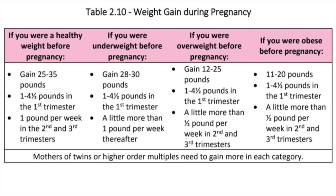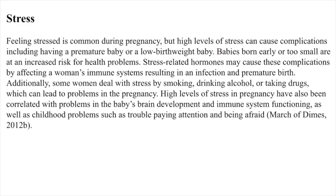Mothers of twins or higher order multiples need to gain more weight in each category. Stress: feeling stressed is common during pregnancy, but high levels of stress can cause complications, including having a premature baby or a low birth weight baby. Babies born early or too small are at an increased risk for health problems. Stress-related hormones may cause these complications by affecting a woman's immune systems, resulting in an infection and premature birth. Additionally, some women deal with stress by smoking, drinking alcohol, or taking drugs, which can lead to problems in the pregnancy. High levels of stress in pregnancy have also been correlated with problems in the baby's brain development and immune system functioning, as well as childhood problems such as trouble paying attention and being afraid.